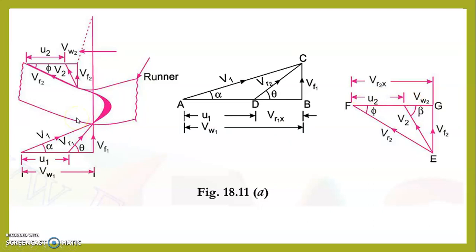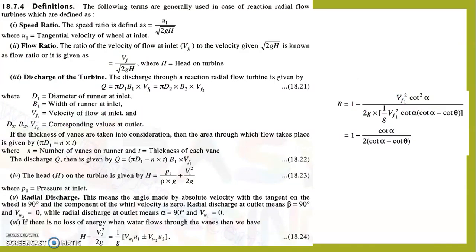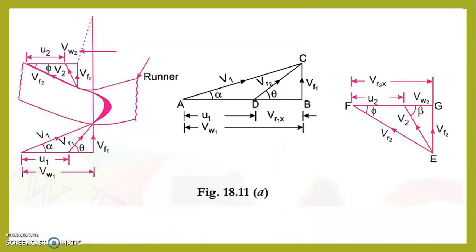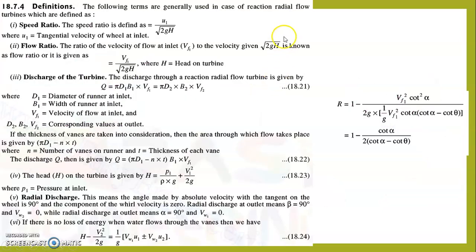Before going to the first problem, we need to discuss a few more points about Francis turbine. The first is the speed ratio: Ku × √(2gH) = U, where Ku is the speed ratio. The next new term is the flow ratio, which is the ratio between the velocity of flow and the actual velocity √(2gH). That is, CV × √(2gH) is called the flow ratio.